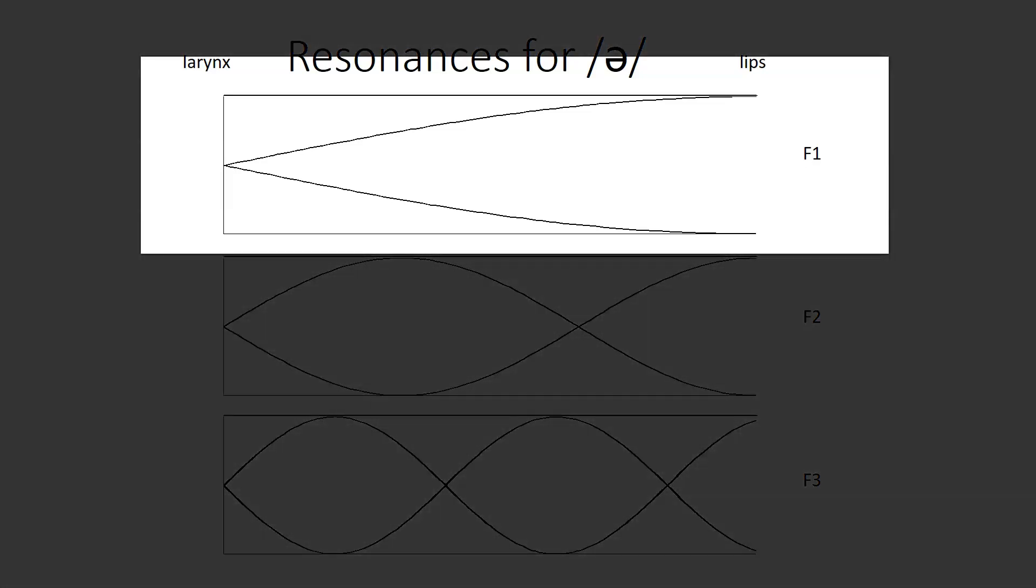The standing wave resonances for a half-open tube can be represented by these images. The first formant would be the lowest resonance, one where the wavelength is four times the length of the tube. Or in the case of a standing wave, one where one quarter of a complete wave fits within the tube. It has a node at the larynx end, which is closed, and an anti-node at the lips end, which is open.